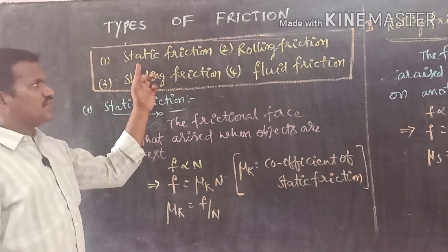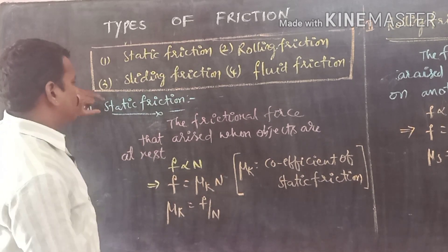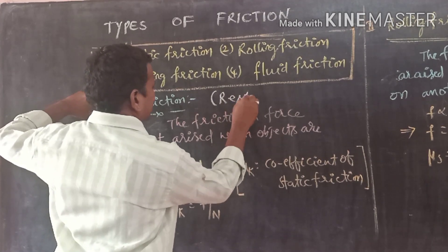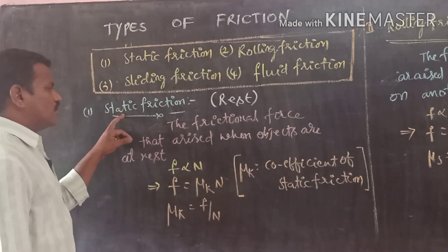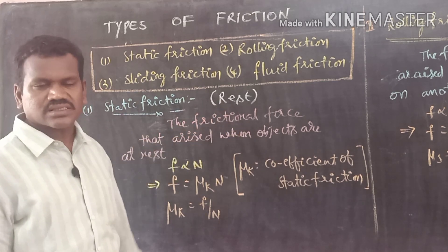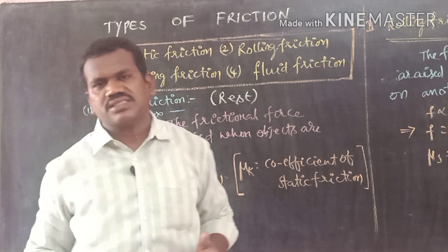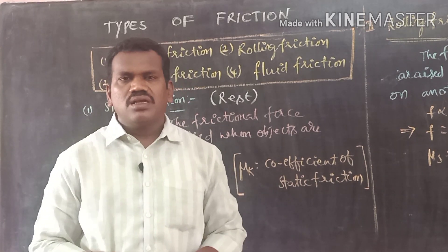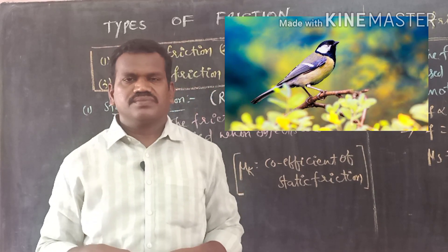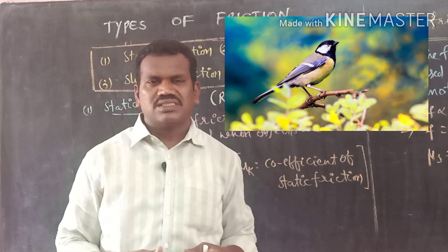First we come to the first type of friction, that is static friction. The word static means the body is at rest — it is a Greek word which means the body is at rest. Both the bodies in contact should be at rest. For example, a bird is sitting on the branch of a tree. Here the bird and the tree both are at rest.